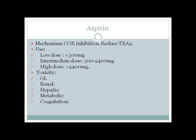Aspirin can also cause coagulation problems. By inhibiting thromboxane A2, aspirin reduces platelet aggregation, leading to platelet dysfunction and increased bleeding time. Note that prothrombin time and activated partial thromboplastin time remain normal.